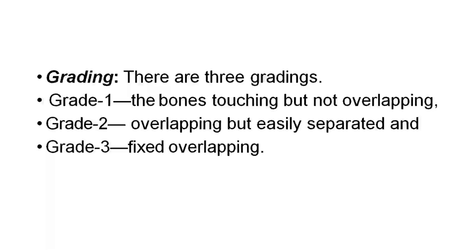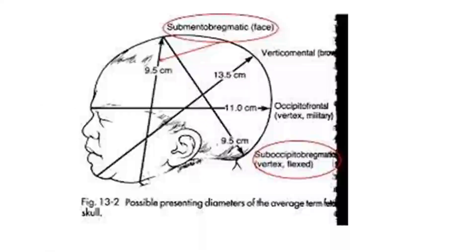Grading of molding: Grade 1 — bones touching but not overlapping; Grade 2 — overlapping but easily separated; Grade 3 — fixed overlapping.